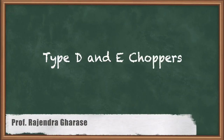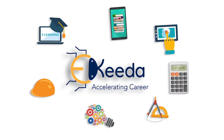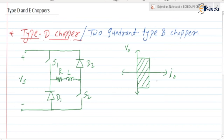Hello friends. In this video we are going to discuss about type D and type E choppers. Type D chopper is also known as the two quadrant type B chopper. It is a two quadrant chopper and it operates in the first and the fourth quadrant.